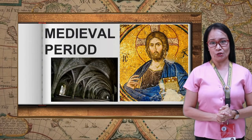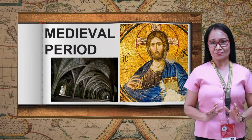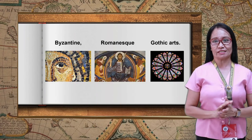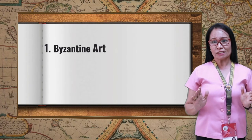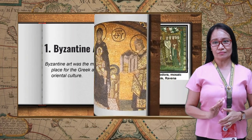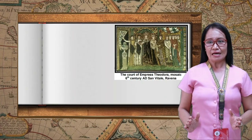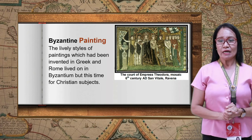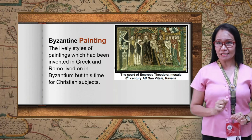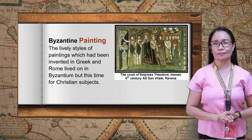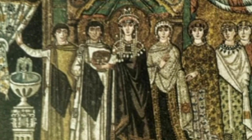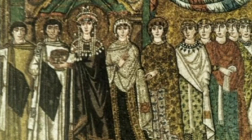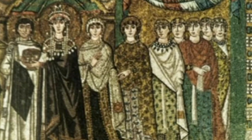After the classical period comes the medieval period, which includes Byzantine, Romanesque, and Gothic arts. Byzantine art was the meeting place for Greek and Oriental culture. Byzantine painting carried on the lively styles invented in Greece and Rome, but this time for Christian subjects. By the 11th century, Greek and Oriental styles blended together in magnificent, imposing images which adorned churches in large and small forms.